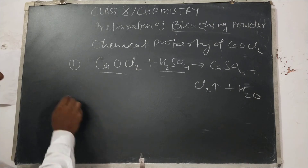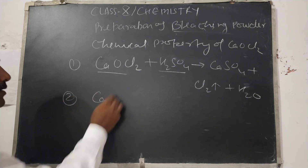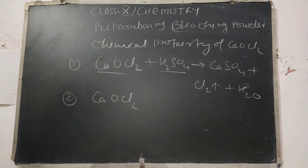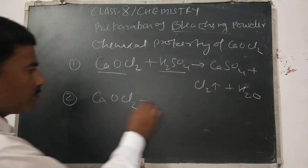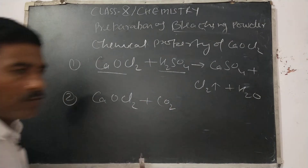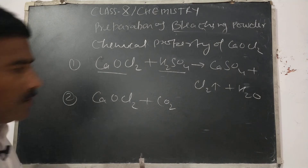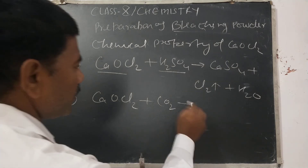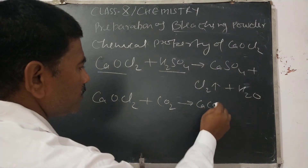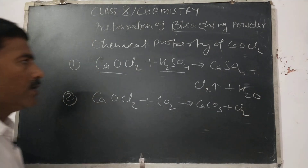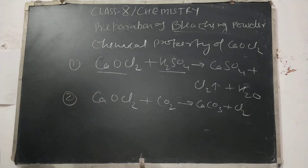Similarly, the second chemical property: if we pass CO₂ gas into CaOCl₂, then CaCO₃ is formed and chlorine gas is released. So these are the chemical properties of bleaching powder.